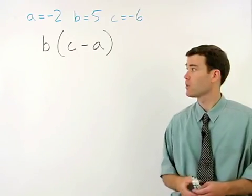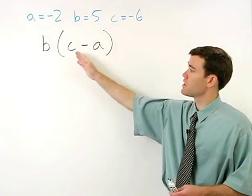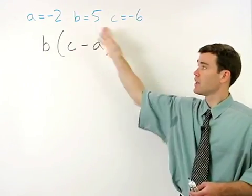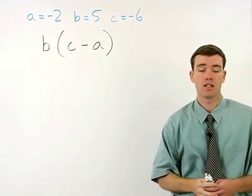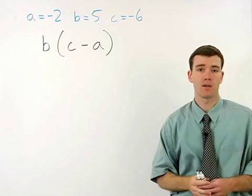In this problem, we're asked to evaluate b times parentheses c minus a, given the same values for a, b, and c that we used in the previous example.